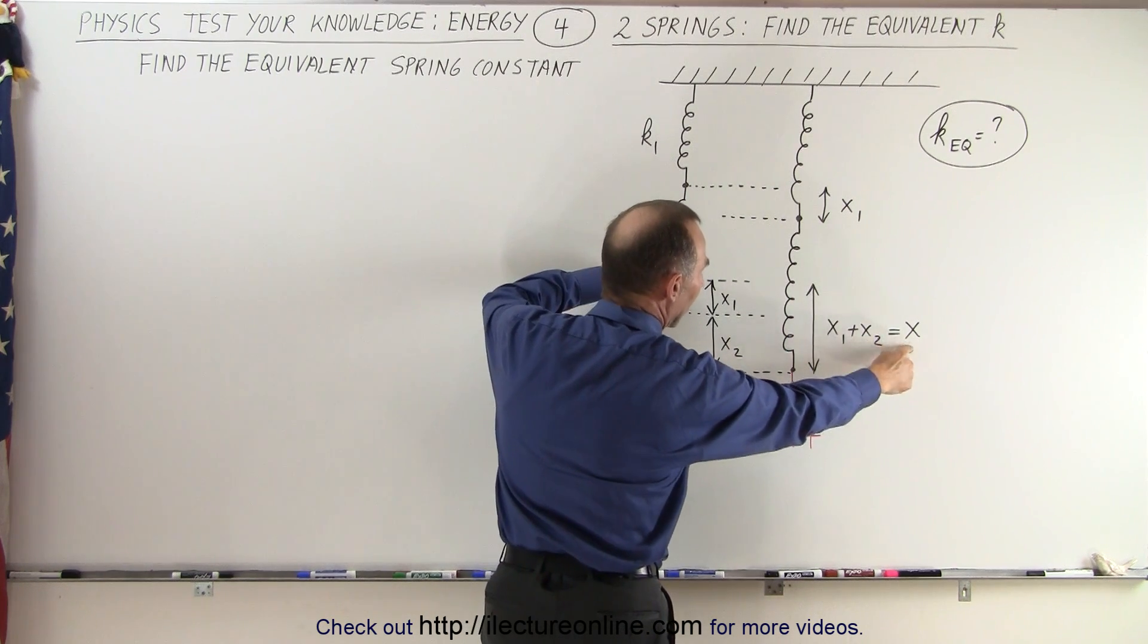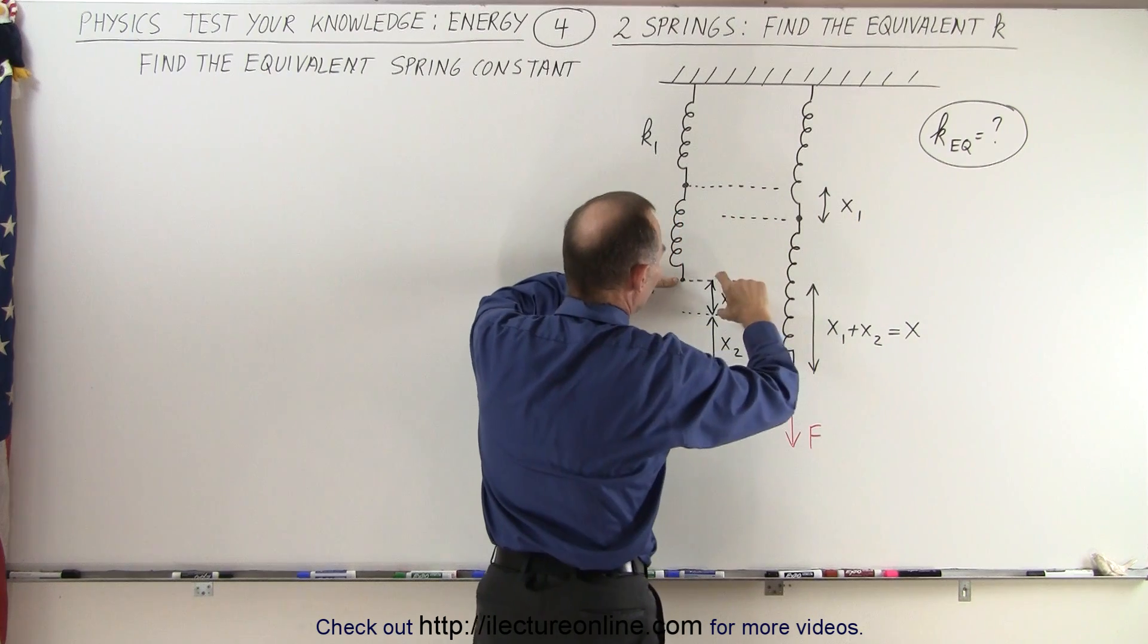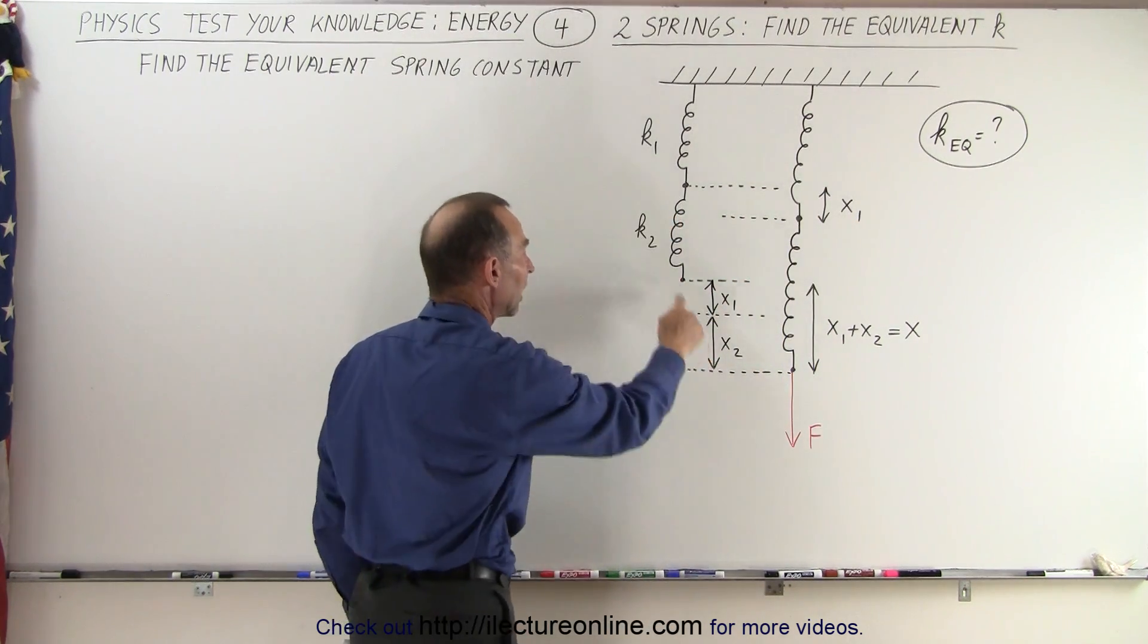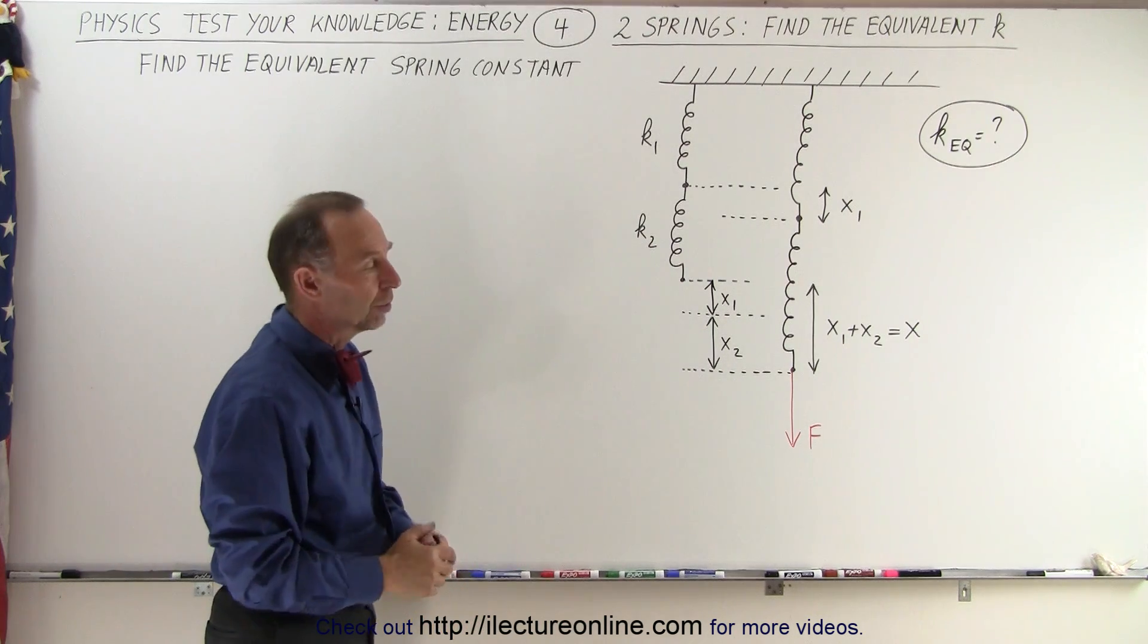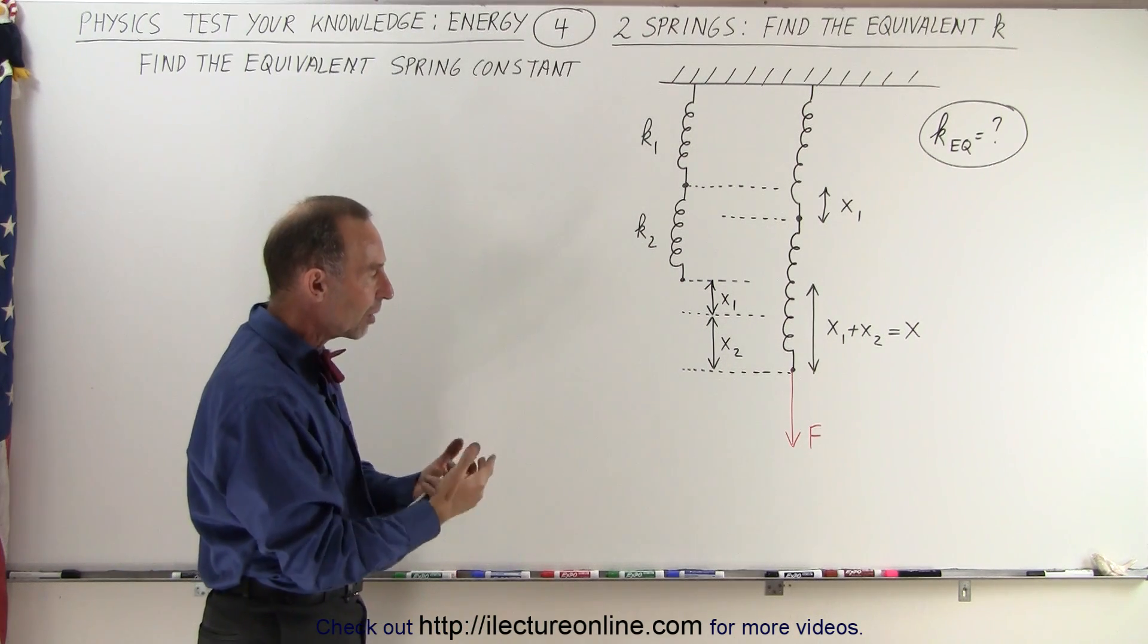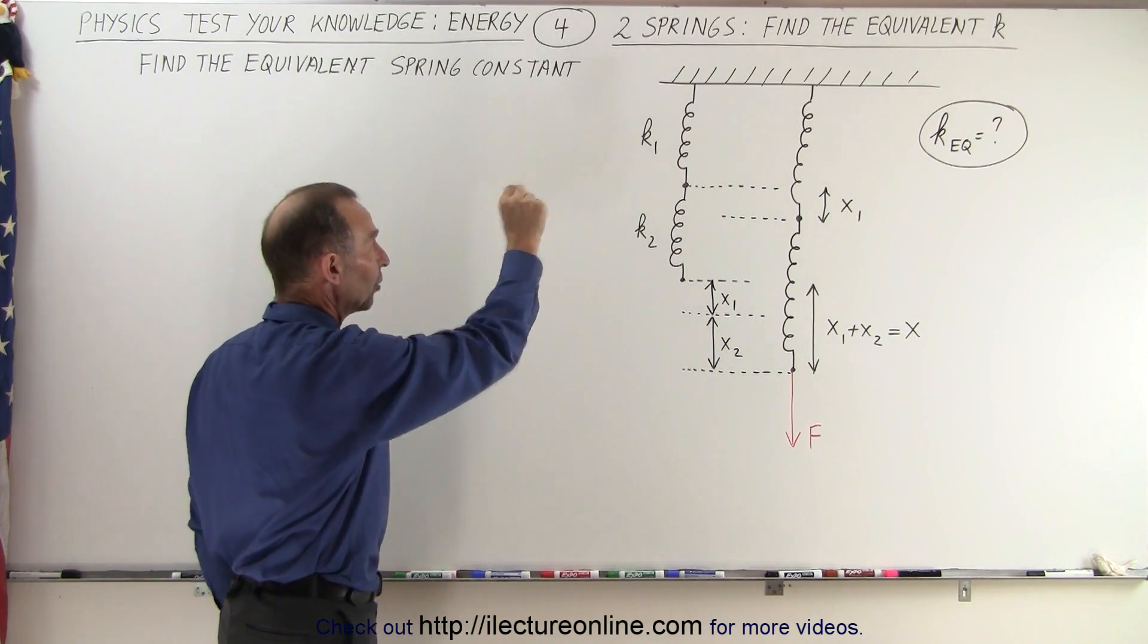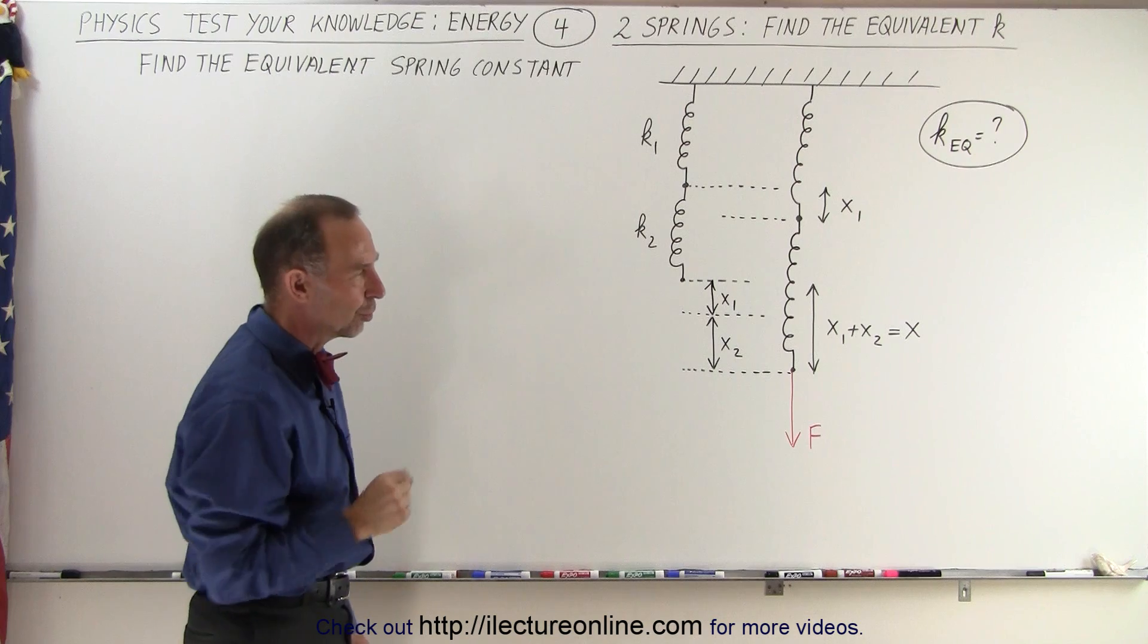We can say x1 plus x2 is equal to x. If we subtract from that x1, the remainder of that is x2, the elongation of the second spring. Notice all that is caused by the application of a single force F, which is the same force that applies to k1 as it is to k2.